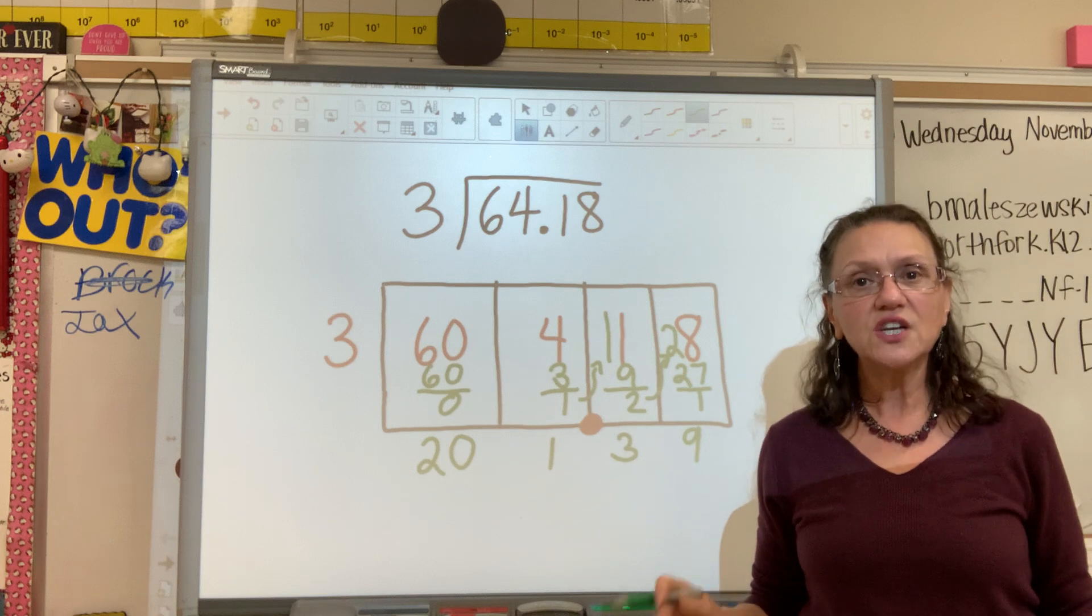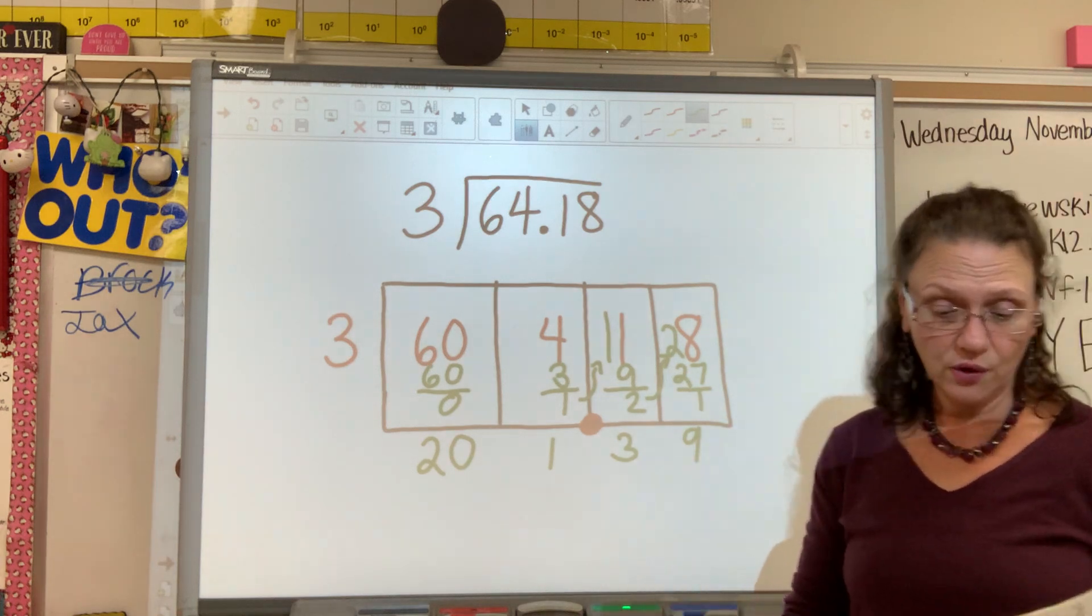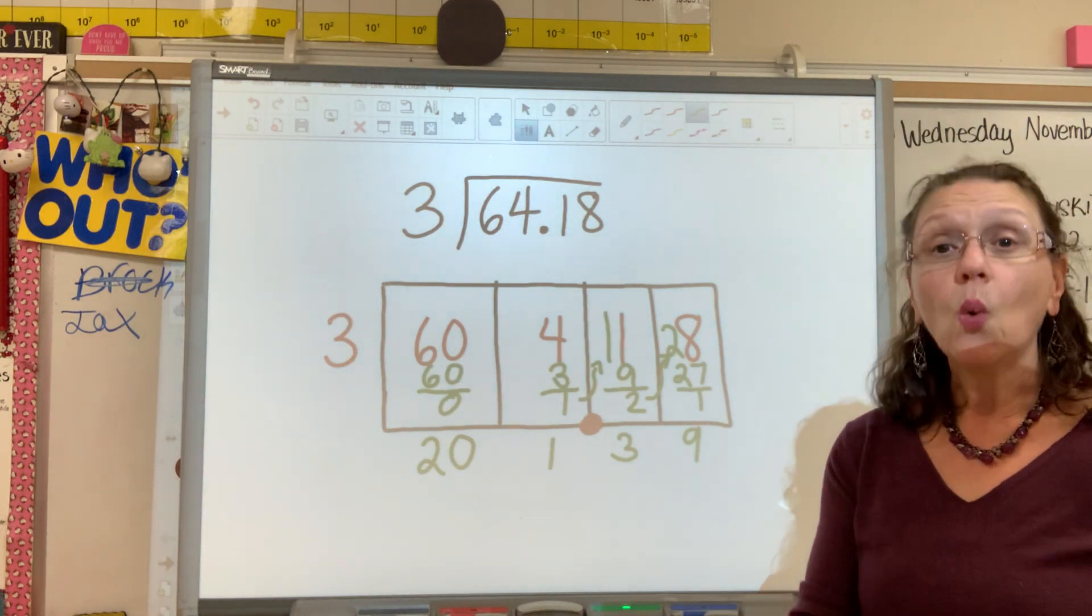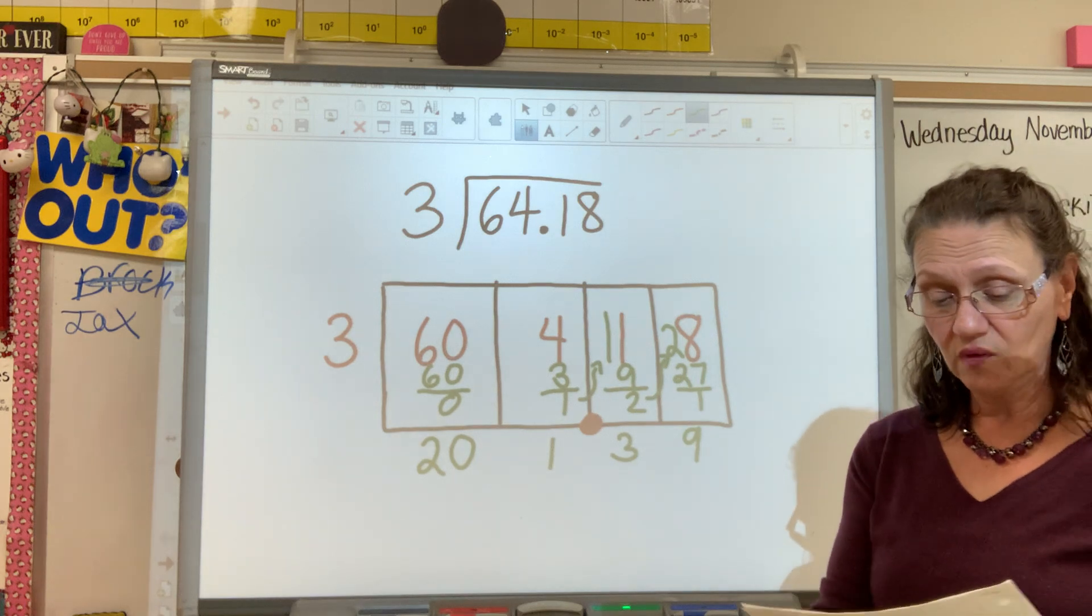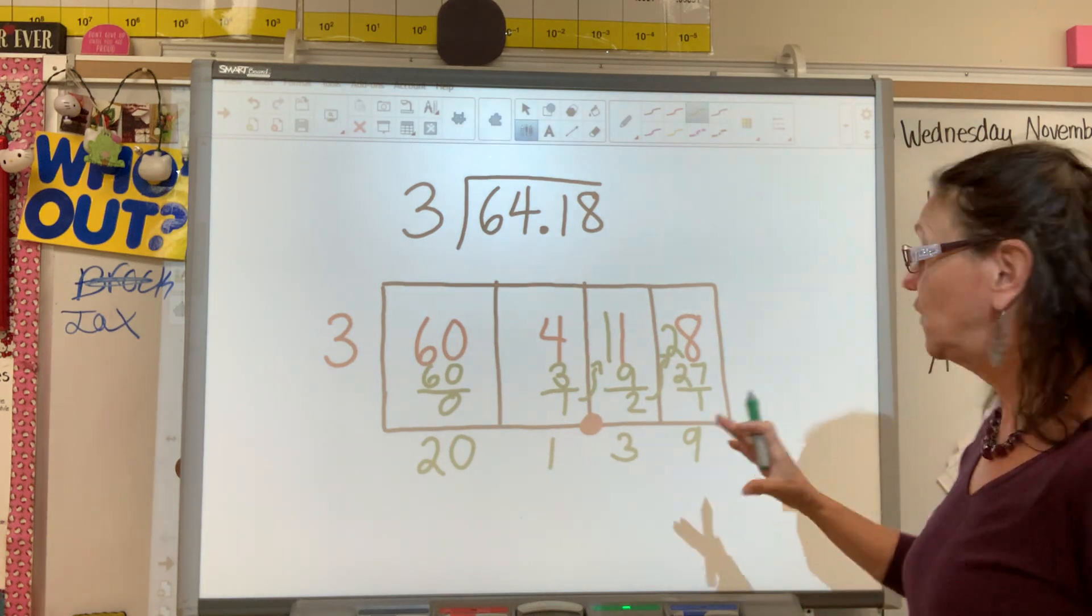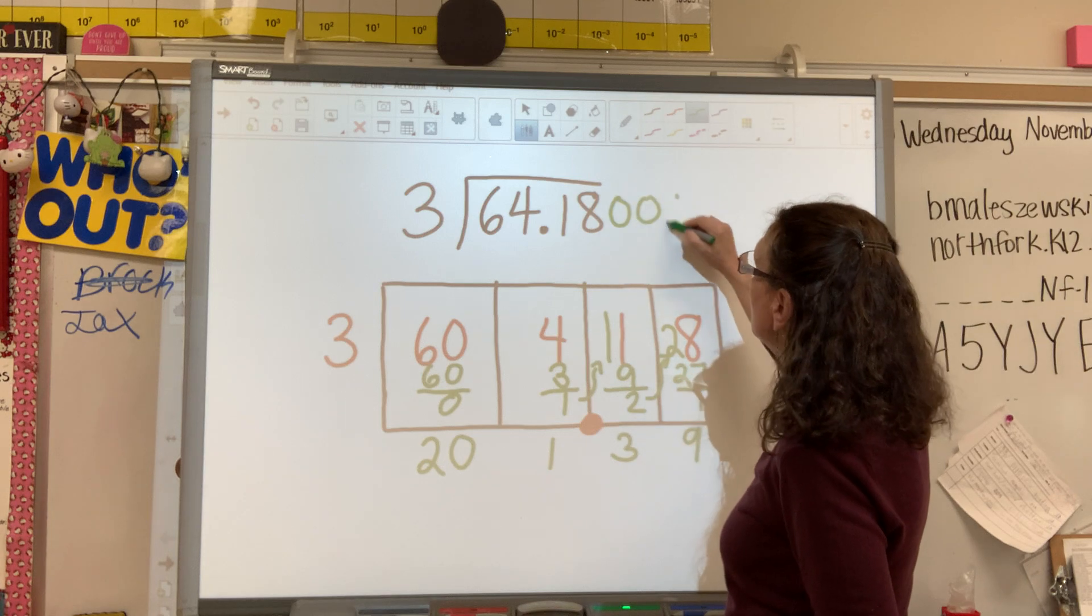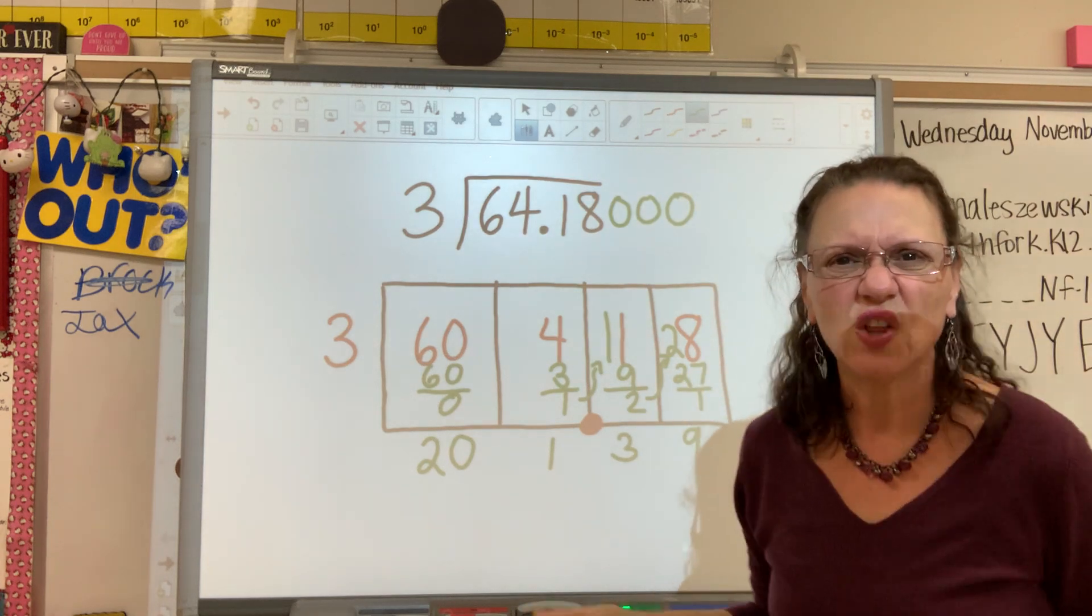Now, normally with long division, that would be my remainder. But what we can do with decimals is by adding a zero to this right here, I can add as many zeros as I like, and it doesn't change the value.